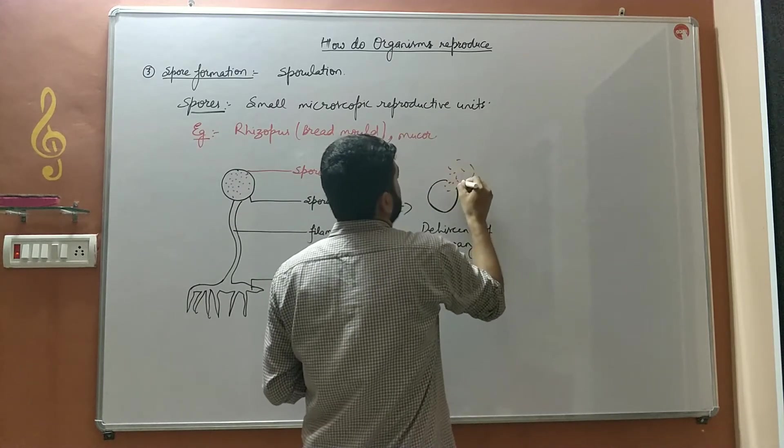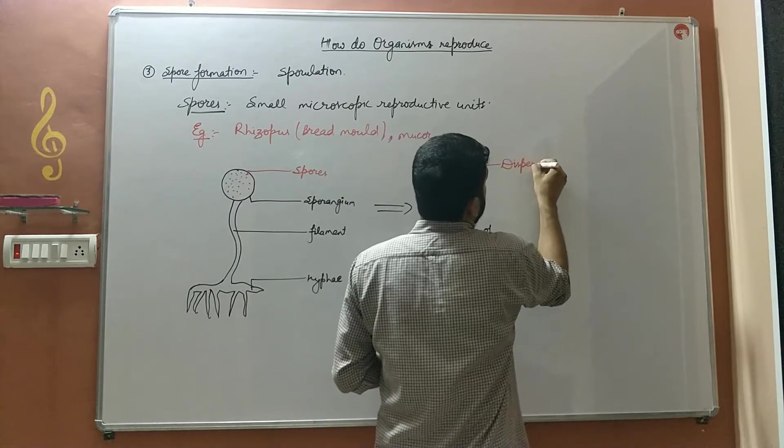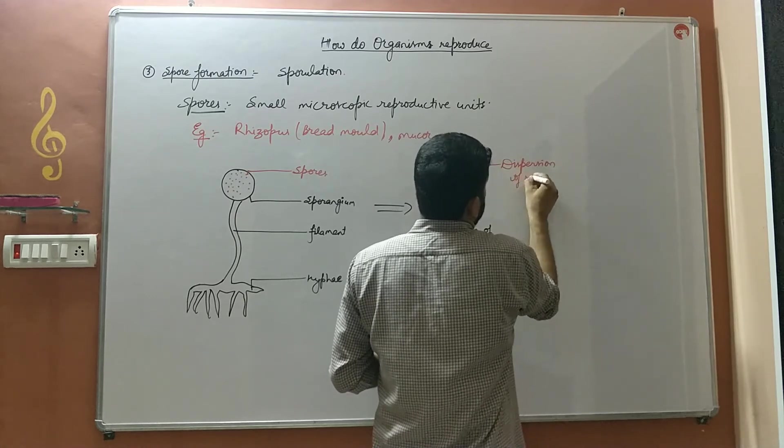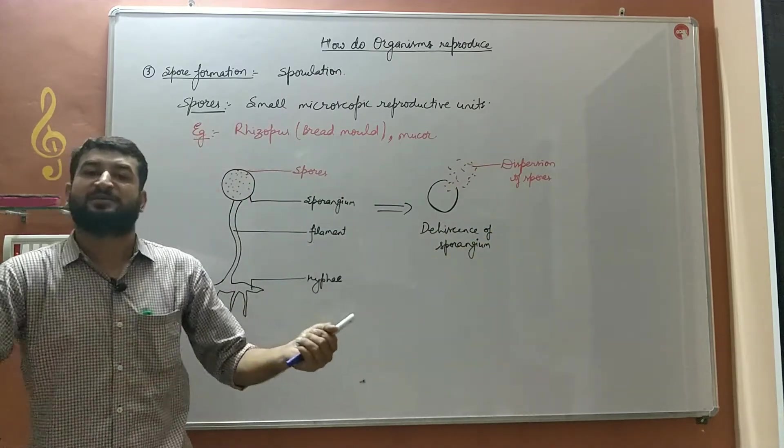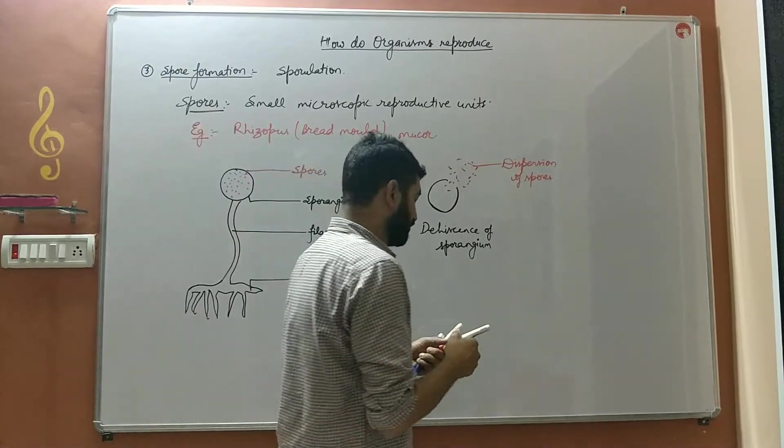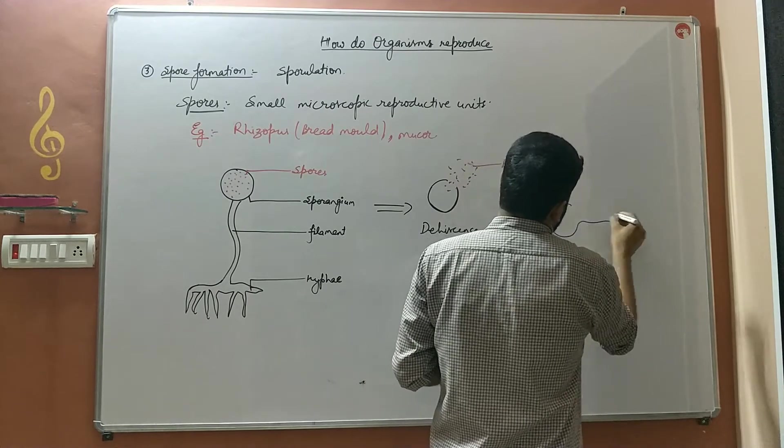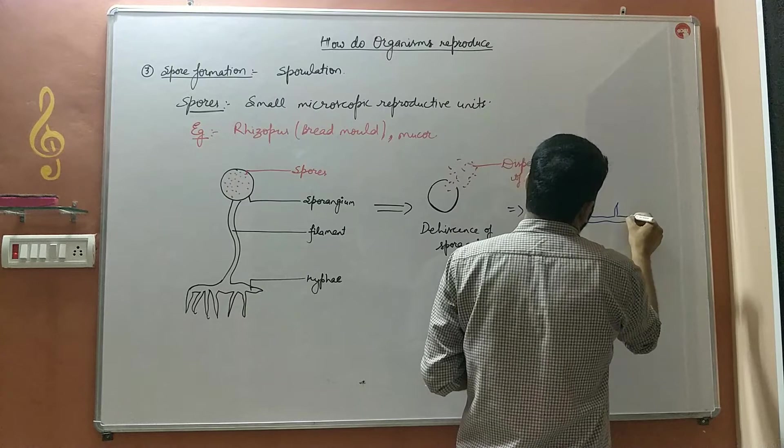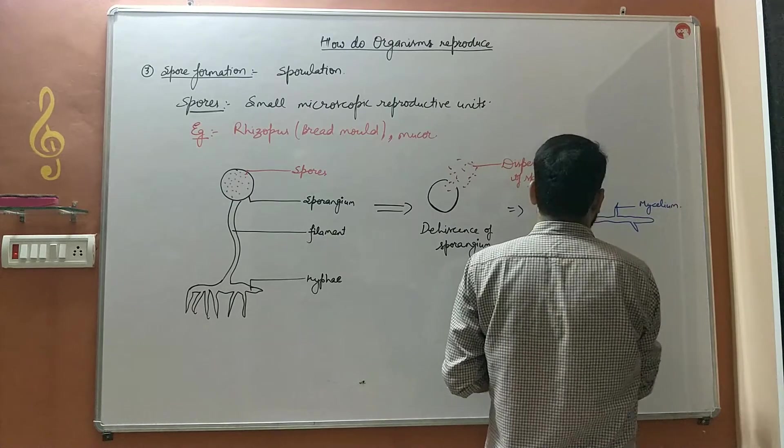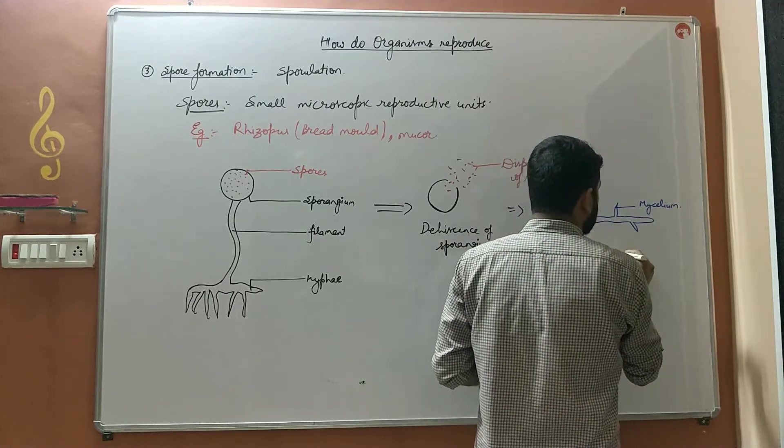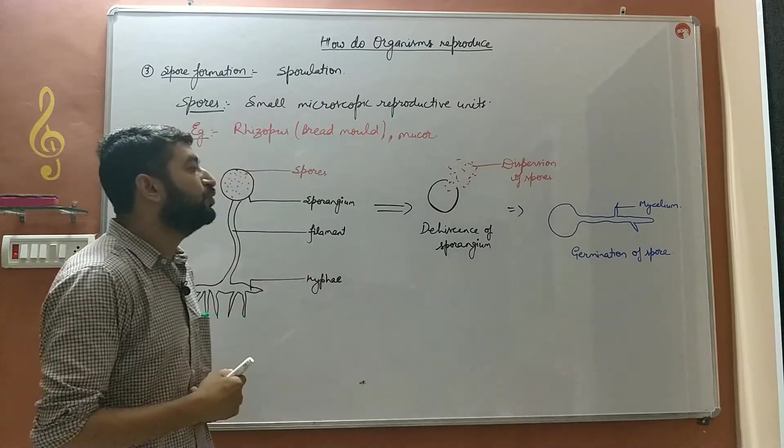The bursting disperses the spores to various areas or nearby areas, wheresoever that spores fall off. That spore produces or germinates to produce mycelium and that's how a new organism is produced. After germination it will give rise to a young one, it will give rise to a new organism.